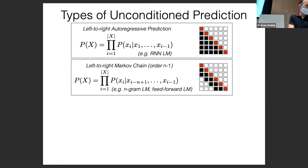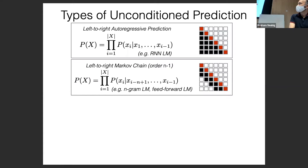Left-to-right autoregressive prediction is a type of unconditioned prediction because all constituents of X are conditioned only on other things that are part of X. You're conditioning on other elements of X, but not on something that you're not predicting.